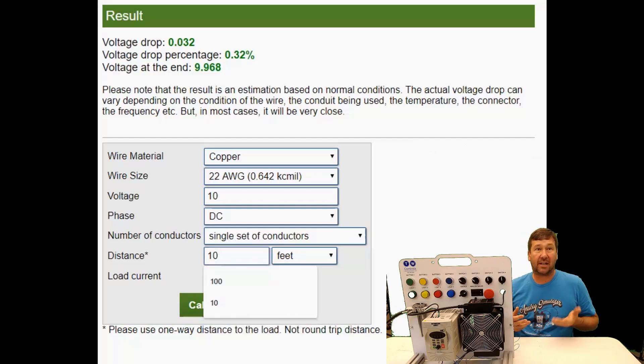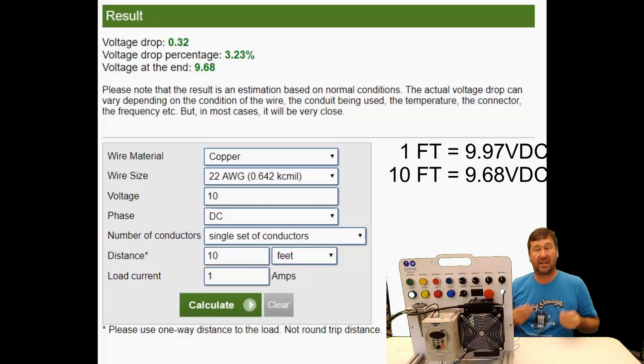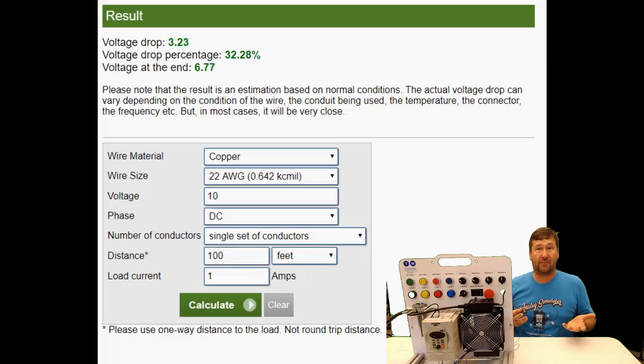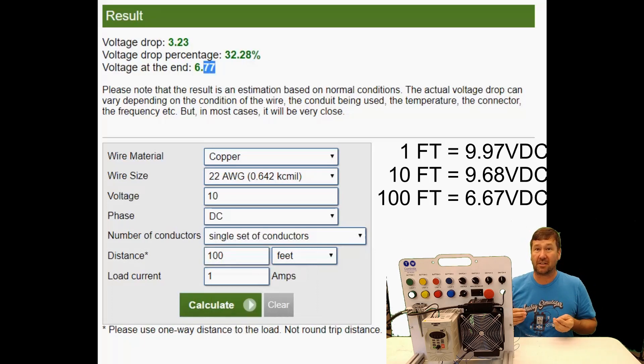If it's 10 feet long, it's going to be 9.68 volts or 0.3 volts less than before. Now let's make it 100 foot long, which isn't that unusual for a field instrument. The voltage on the other end is going to be 6.77 volts.